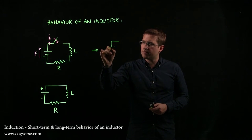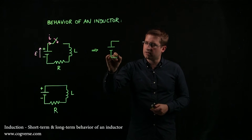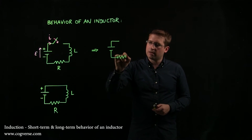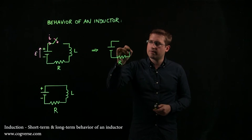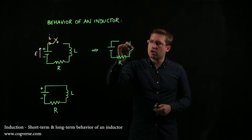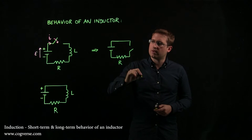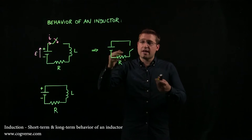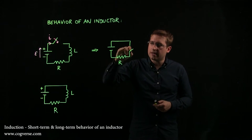So at t equals zero, I can draw my circuit like this. I'll get the inductor out of the way, and I'll just draw an open switch. So I close this one, but it is as if I just open that one at t equals zero.